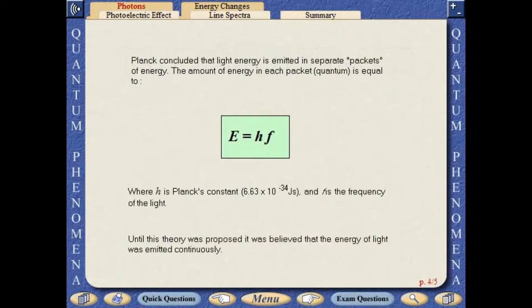Planck concluded that light energy is emitted in separate packets of energy. Until this theory was proposed, it was believed that the energy of light was emitted continuously.